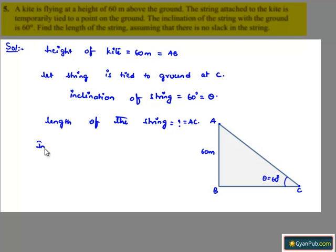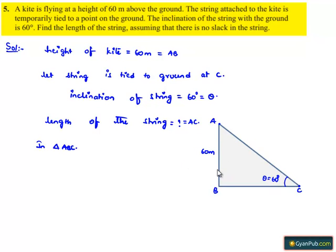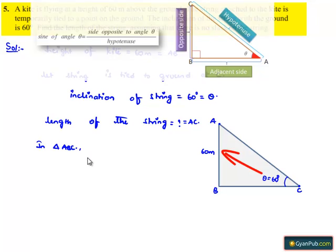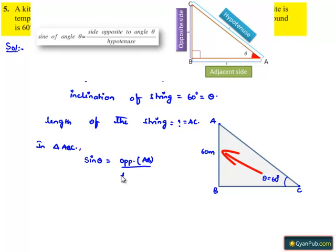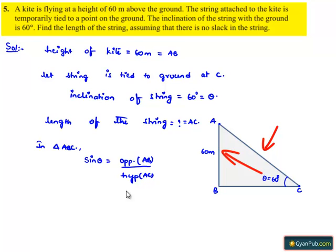If we observe in triangle ABC, we have side AB and the angle opposite to it is theta, which is 60 degrees. We need to find the length of the string, that is AC. In order to find this, let us apply the trigonometric ratio sine. We get sine theta is equal to the opposite side, that is AB, divided by the hypotenuse, that is AC.